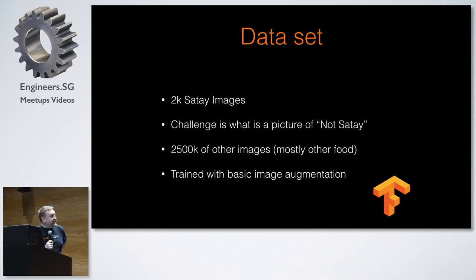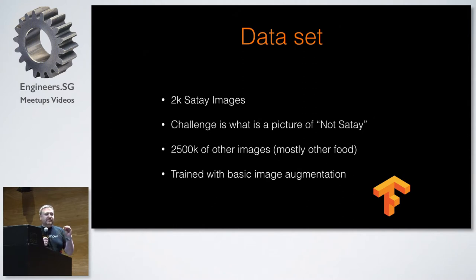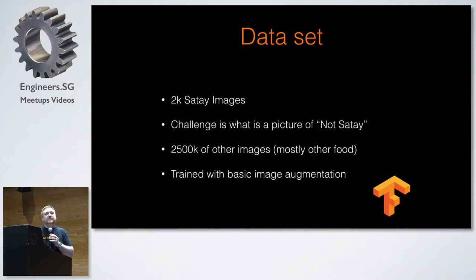If you ever have to download a whole bunch of images very quickly from the web, there's a very cool Chrome extension called Fatkun — F-A-T-K-U-N — which allows you to bulk download a whole bunch of images. Of course you will check that you have the copyright to use those images first.